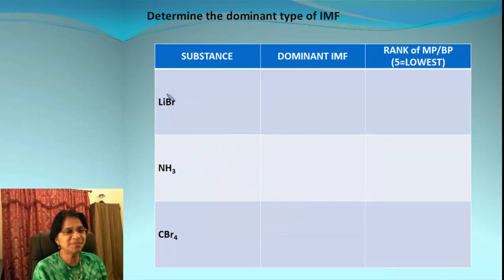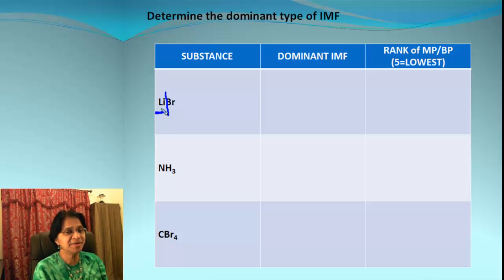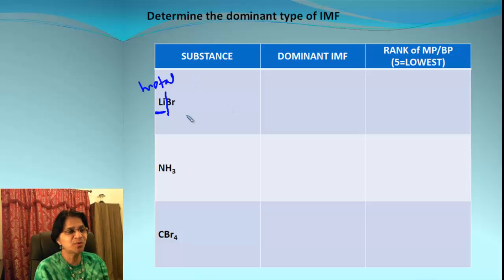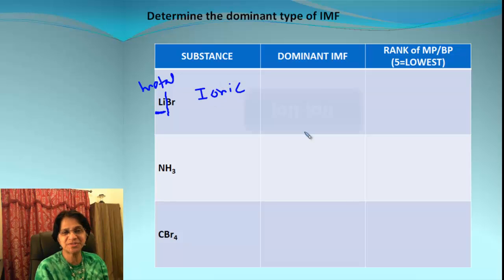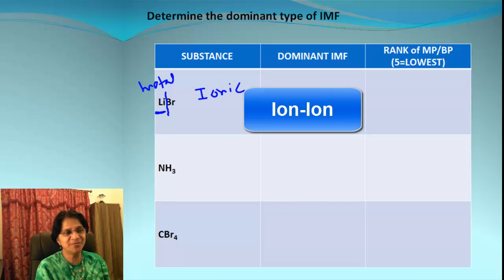The next molecule is simple — this is lithium bromide, LiBr. Lithium is a metal and bromine is a nonmetal, which makes this an ionic substance. And if it is an ionic compound, we get ion-ion interaction.